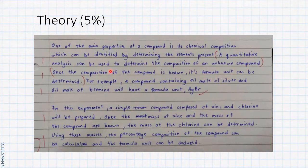Then, once the composition of the compound is known, its formula unit can be determined. So you get another mark. This student gives an example for silver bromide. Our experiment is zinc chloride, and then he gives another example silver bromide. It's acceptable.